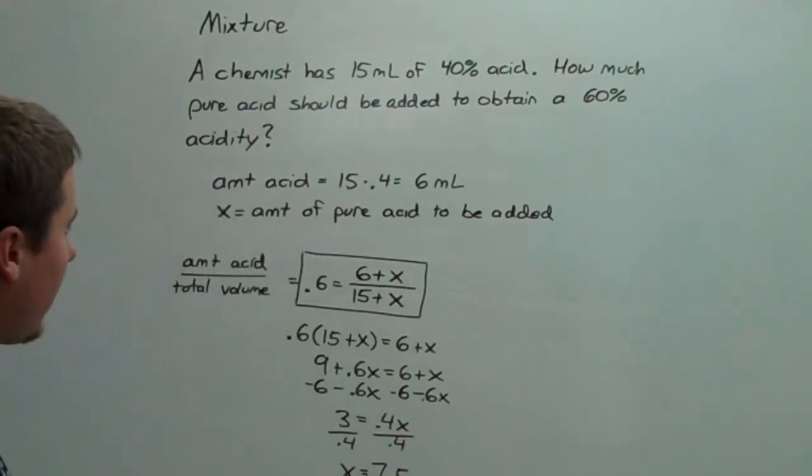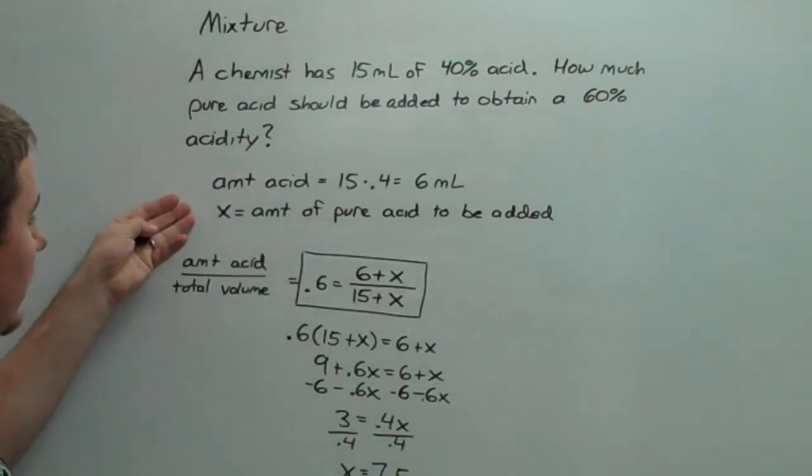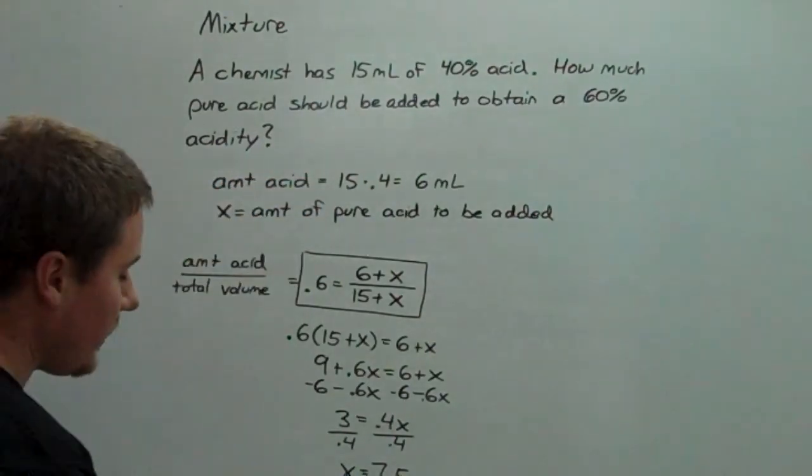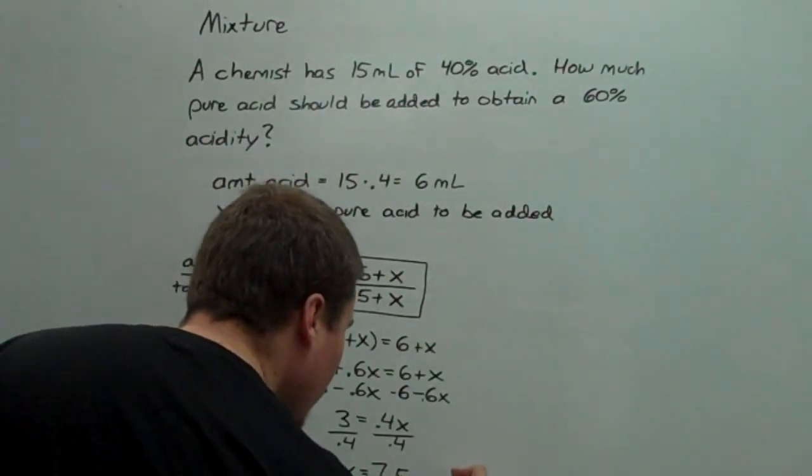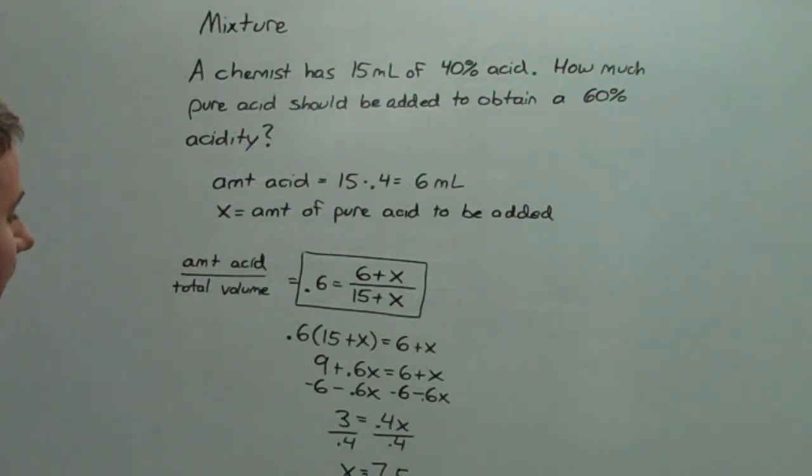And to double check, I look back at my key, and I say that x is the amount of pure acid to be added, and our units are milliliters. So, I stick the unit milliliters onto this. So, if we add 7.5 milliliters of pure acid, we will obtain the 60% concentration.